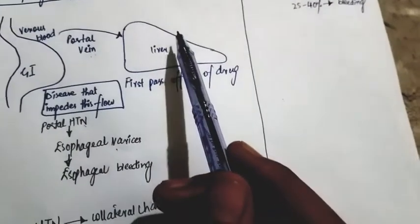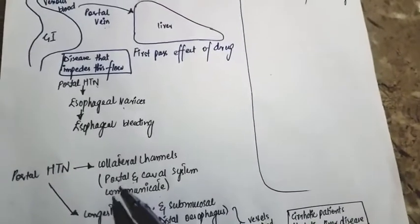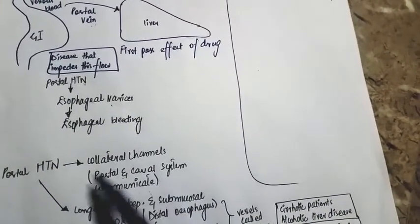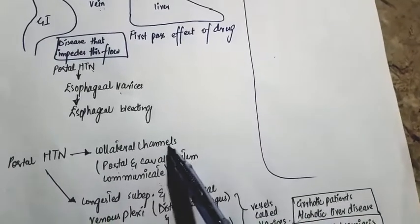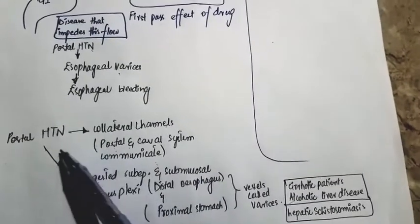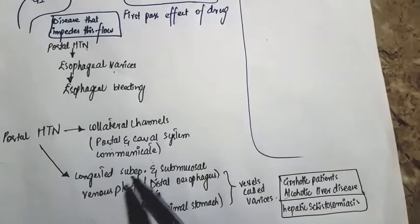The portal vein communicates with the inferior vena cava. Where these portal and caval systems communicate, collateral channels will form in portal hypertension. This will also form congested sub-epithelial and submucosal venous plexuses in the distal esophagus.